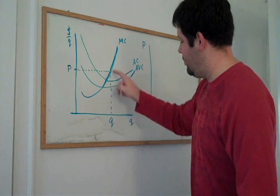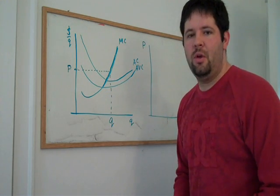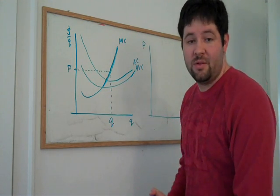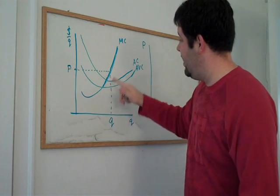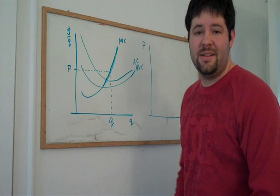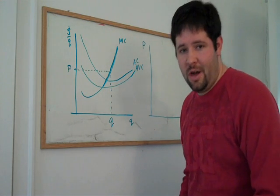We set marginal cost equal to the price, and that is how the firm maximizes profits when it is a price-taking firm. So it chooses to supply this quantity. And we do that with each price above average variable cost, because that's the only place where it's actually worth producing for the firm. And we get to trace out a locus of points that tell us the quantity that the firm provides as a function of the price.